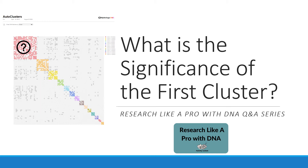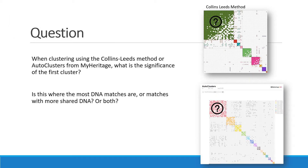Hello, I'm Nicole Dyer and this is the ResearchLiker Pro with DNA question and answer series. Our question today from a ResearchLiker Pro with DNA study group member is: what is the significance of the first cluster? We're talking about MyHeritage clusters, autoclusters, and Collins-Leads method clusters. The question is: when clustering using the Collins-Leads method or autoclusters from MyHeritage, what is the significance of the first cluster? Is this where the most DNA matches are, or matches with more shared DNA, or both?